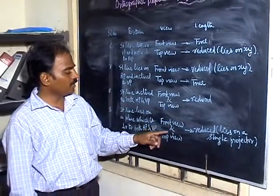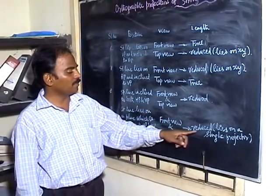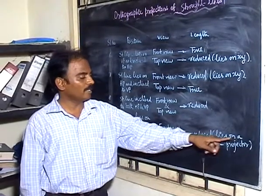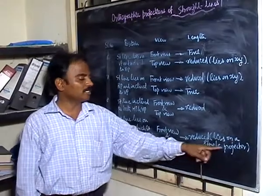In this case, both the front view and top view will be of reduced length, and the line lies on a single projector.